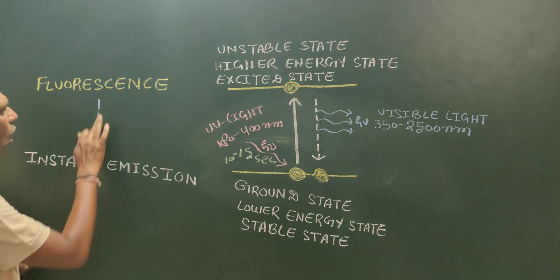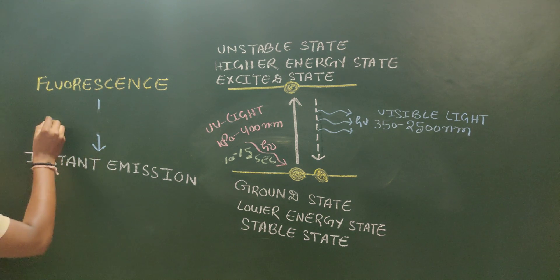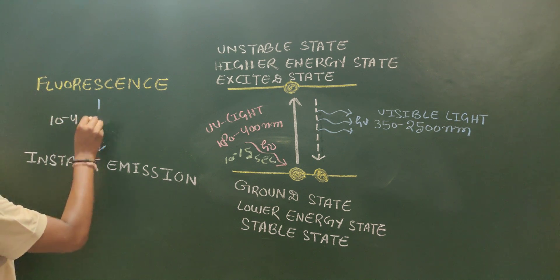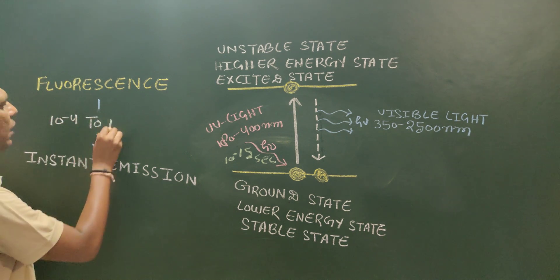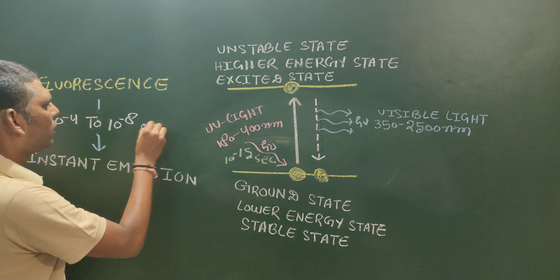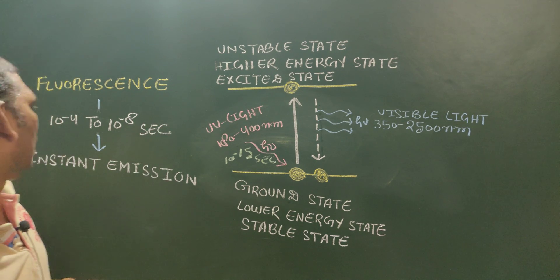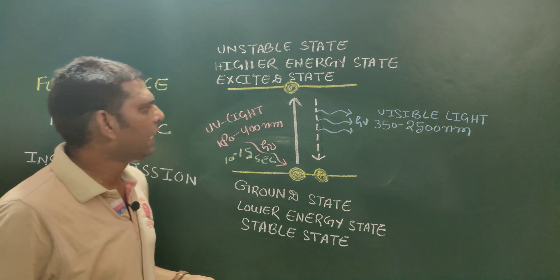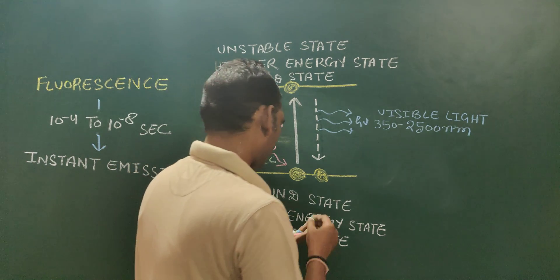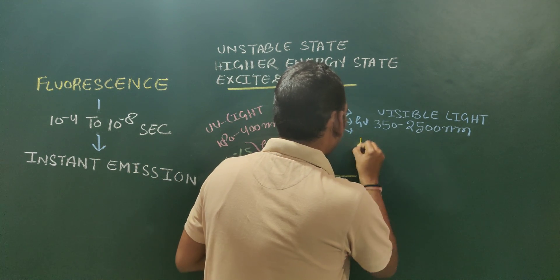The time of fluorescence is about 10 to the power minus 4 to 10 to the power minus 8 seconds. Now let's talk about phosphorescence.